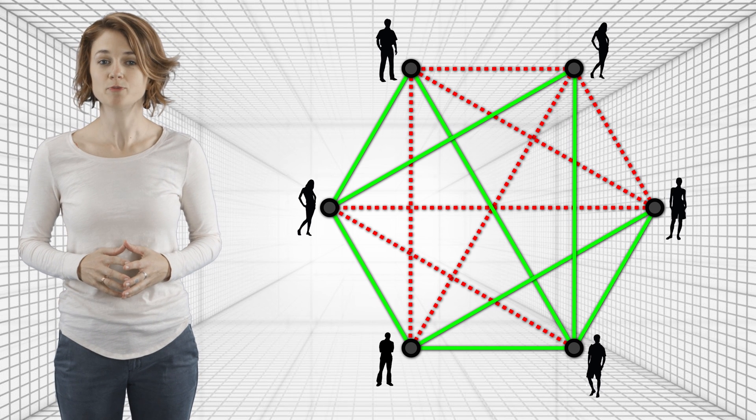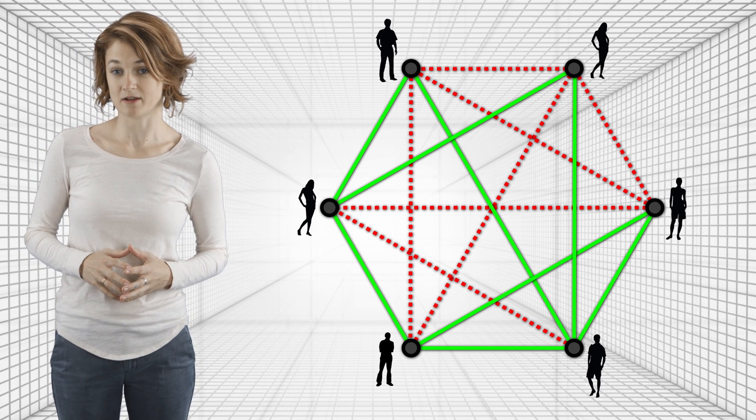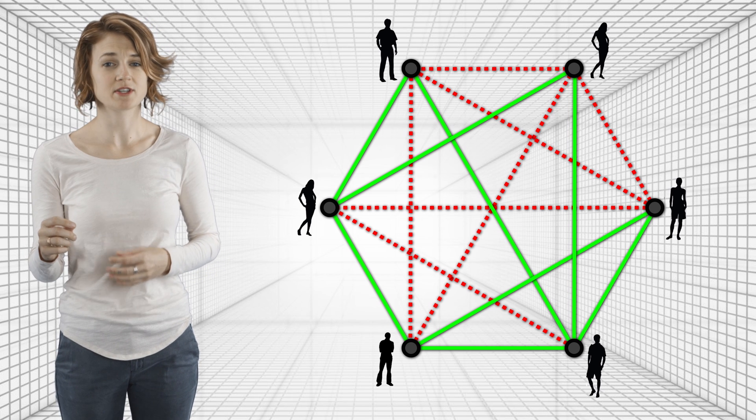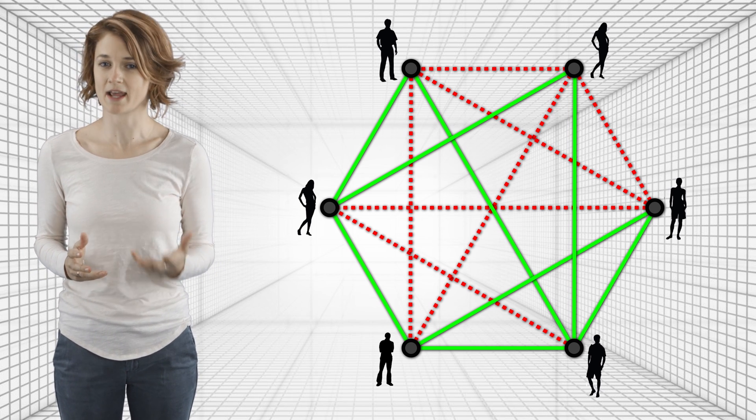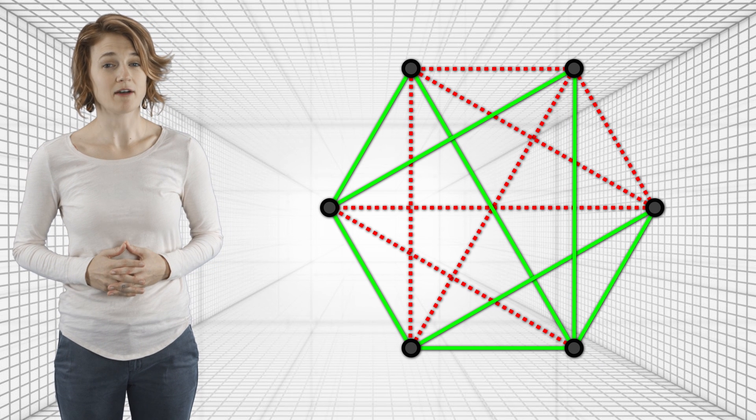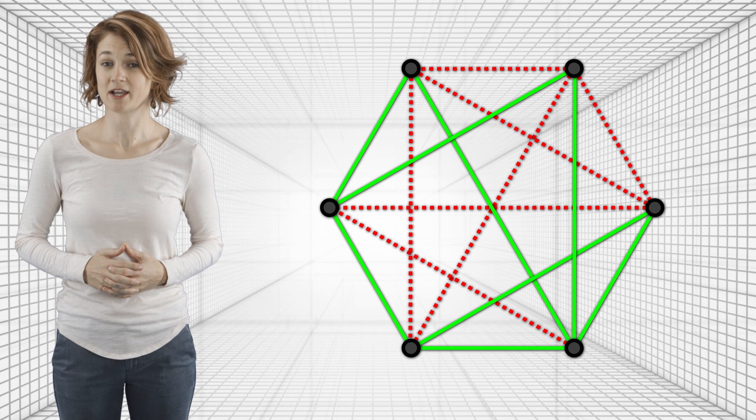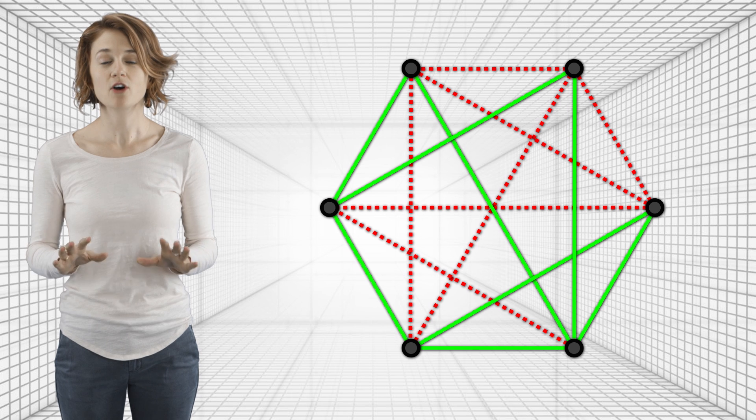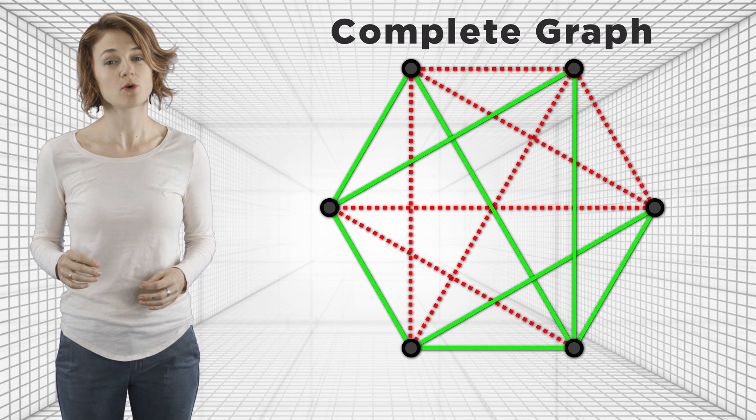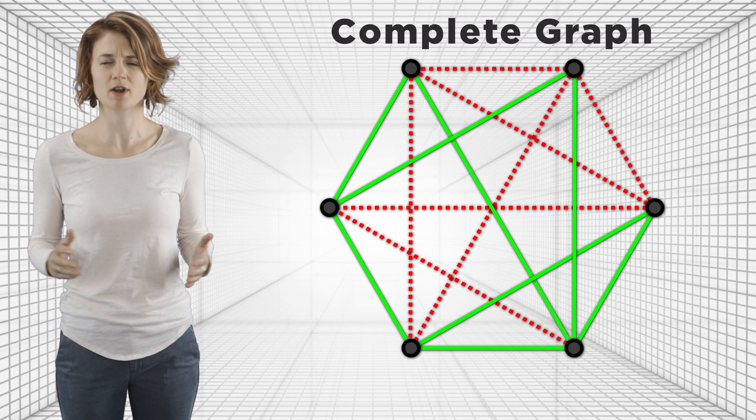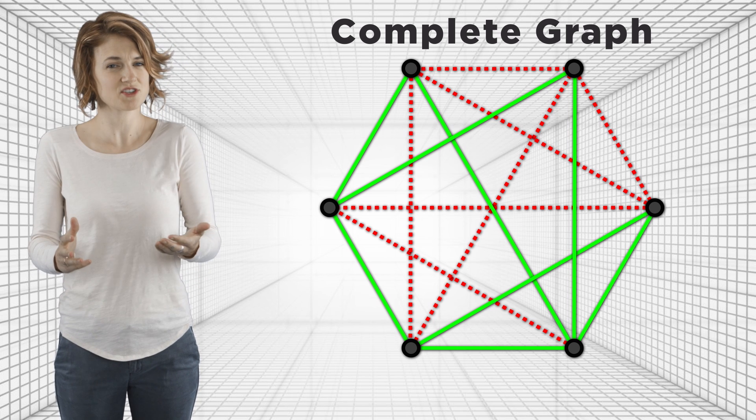Notice that any two people are either friends or enemies. That is, every person is connected to every other person by either a green or red edge. This kind of graph, where every vertex is connected by an edge to every other vertex, is called a complete graph. We'll focus on complete graphs, which correspond to real-world situations where everyone knows everyone else, such as a classroom.